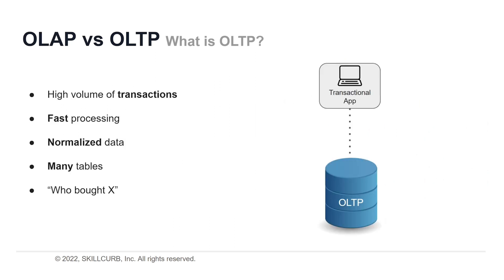Online Transactional Processing, or OLTP, enables the real-time execution of large numbers of database transactions by large numbers of people, typically over the internet. OLTP systems are behind many of our everyday transactions, from ATMs to in-store purchases to hotel reservations. OLTP can also drive non-financial transactions, including password changes and text messages.